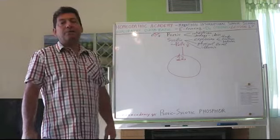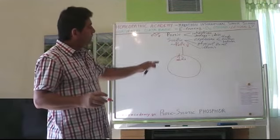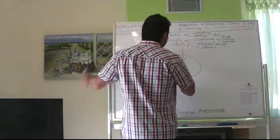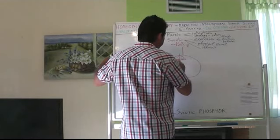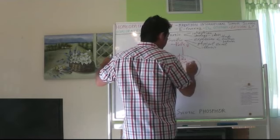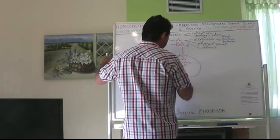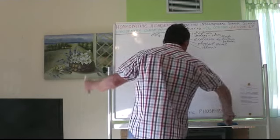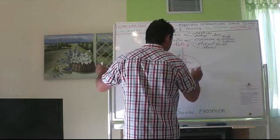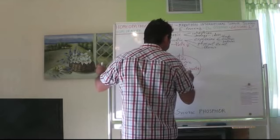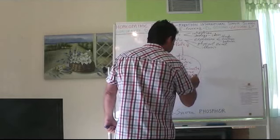So this is the miasmatic aspect of Phosphor. Other very important characteristics of Phosphor: he is very altruistic, very social, very compassionate, very sincere, very giving, and extrovert.